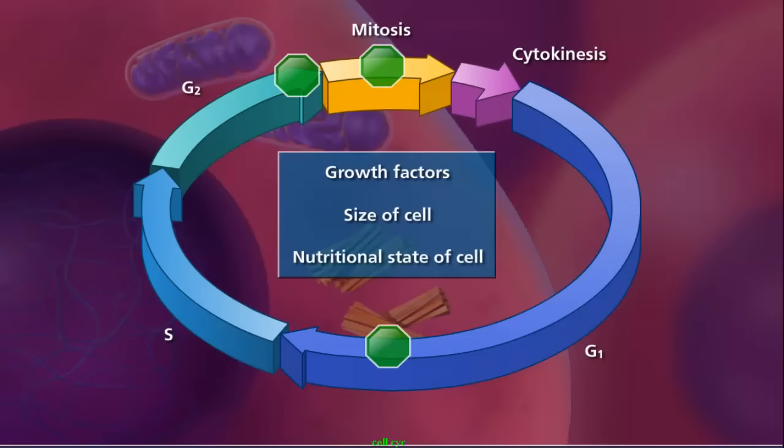Growth factors, the size of the cell, and the nutritional state of the cell are all contributing factors in cell cycle regulation, ensuring that only certain cells divide at appropriate times.